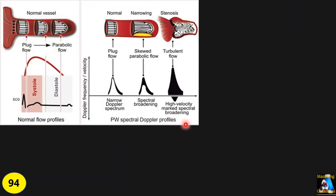Now I need to explain another concept: the blood flow pattern in the cardiovascular system. Generally, we have three types of blood flow in the heart and in vessels — big, medium, and small. Those three are laminar, turbulence, and eddy. I'll focus on laminar and turbulence. In laminar blood flow, the blood flow at each level of the canal or vessel is parallel to each other.